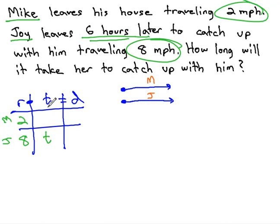Mike has been traveling not just the amount of time it takes Joy to catch up, but Mike's also been traveling that 6-hour head start that he has had, or an extra 6 hours. We add the 6 to the person who left first, because that is his head start over Joy, traveling more time than Joy travels.